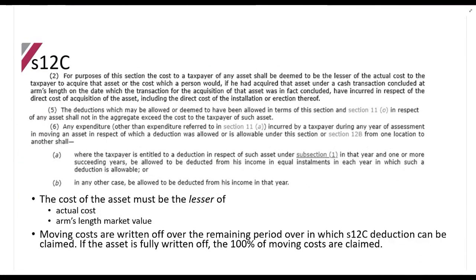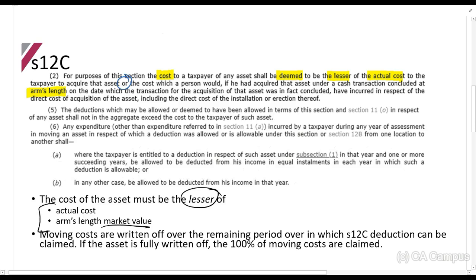Looking at the Act, Section 12C(2) states that the cost to the taxpayer of any asset shall be deemed to be the lesser of the actual cost to the taxpayer to acquire the asset, or the cost at which a person would have acquired the asset under a cash transaction concluded at arm's length on that date. So the cost is the lesser of actual cost or the arm's length market value — you cannot use more than market value.